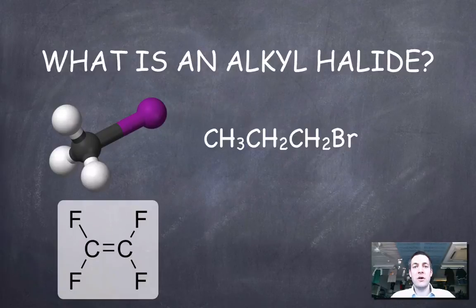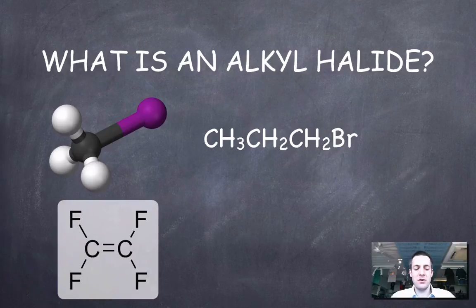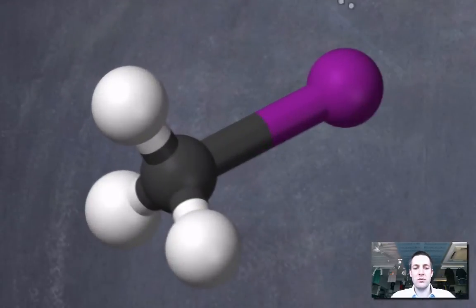Now halogenoalkanes are also called alkyl halides sometimes and I suppose pretty much what we're looking for is for the molecule to have a halogen in it. So if we look at this molecule here, this purple blob is supposed to represent an iodine atom. So that's an iodine atom and because iodine is in group 7 it's a halogen, so this would be called an alkyl halide.